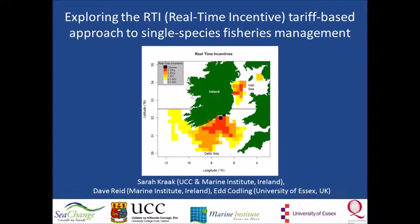In 2011, together with some colleagues, we presented a blueprint for a new fisheries management instrument that we call RTI. Since then we have been developing this concept further. This instrument replaces traditional catch or landings quotas and days at sea limitations. In our system, each fisher gets an annual allocation of fishing impact credits called RTIs — let's say 200 RTIs per year.